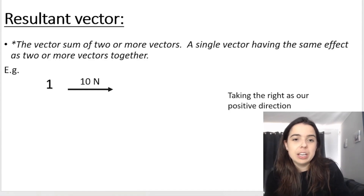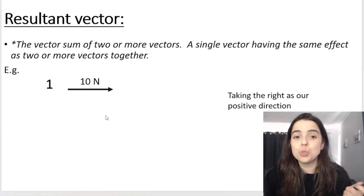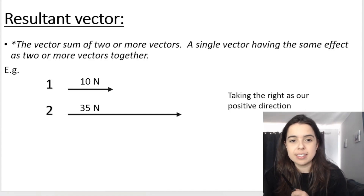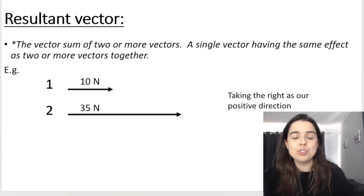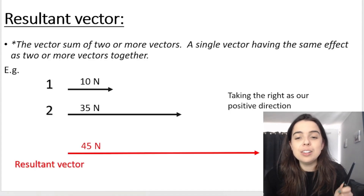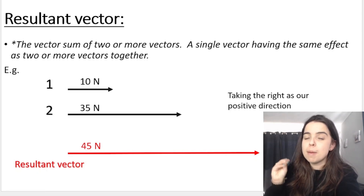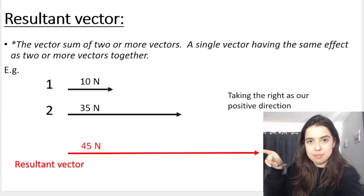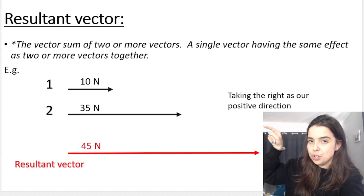For example, I have one force vector of 10 Newtons to the right. If I add another vector of 35 Newtons to the right, instead of writing those two separate vectors, I can represent both of those with a single vector. My single vector is the vector sum — sum means addition — of those two vectors. So 10 Newtons plus 35 Newtons gets you 45 Newtons to the right. The big red vector is the sum of the two smaller vectors.